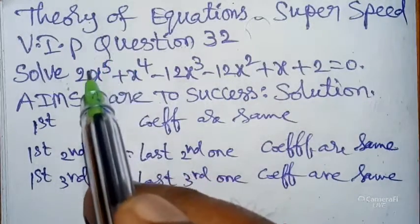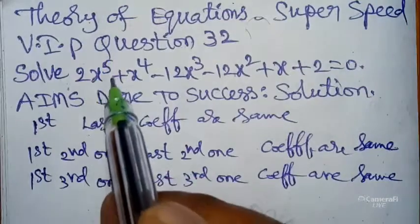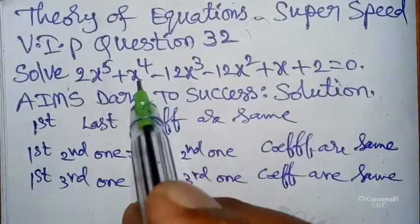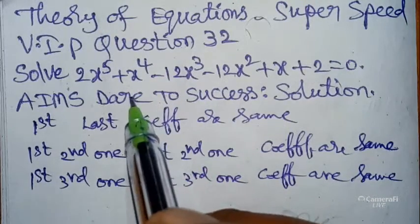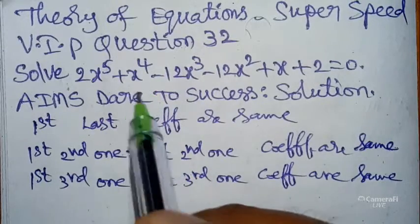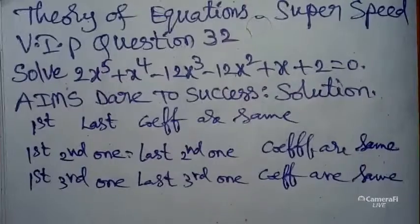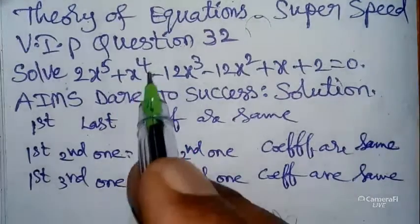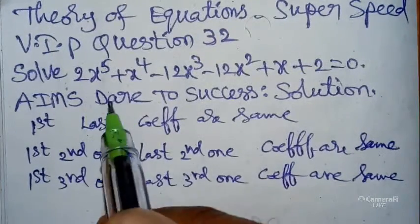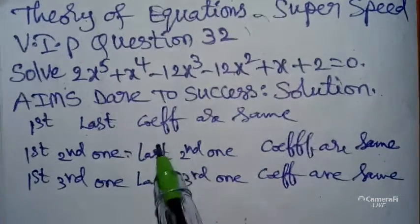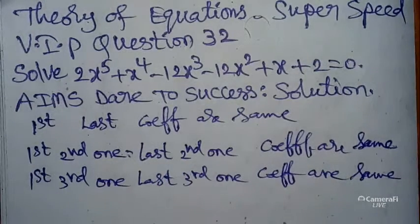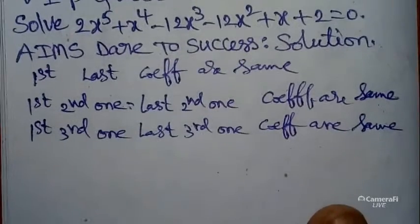You can convert this highest degree 5 into a biquadratic, that is a fourth degree equation. After converting the fifth degree equation to a fourth degree equation, you can continue the usual procedure. If you want to get the x⁴ degree equation solution, you can follow from my previous videos — they are in the description box below this video.